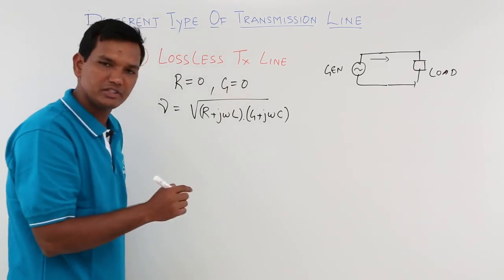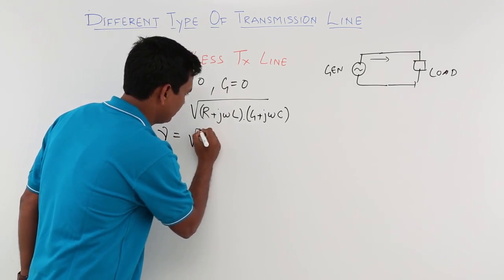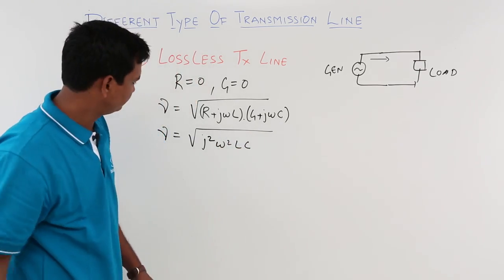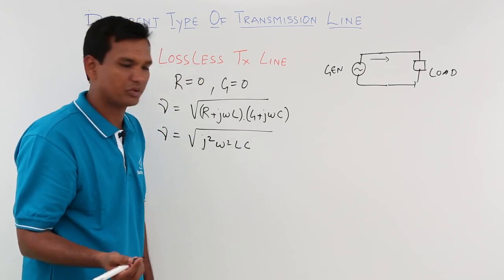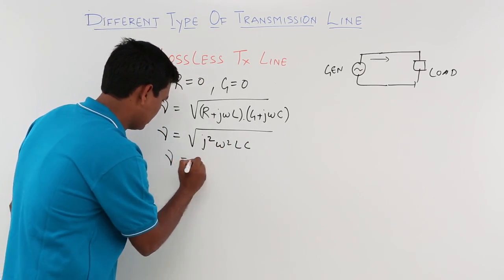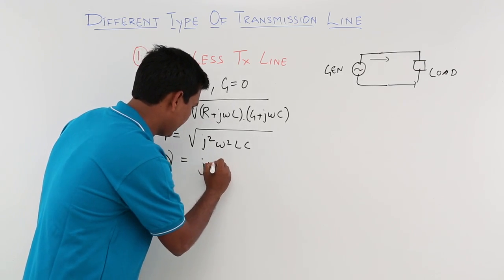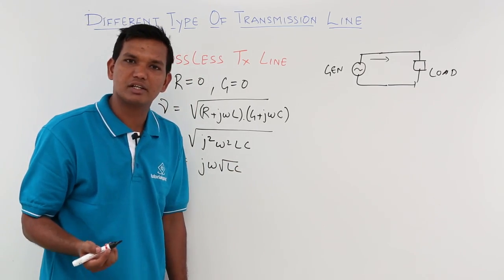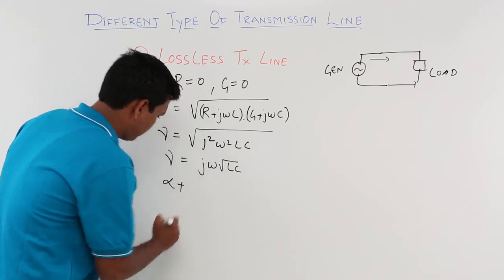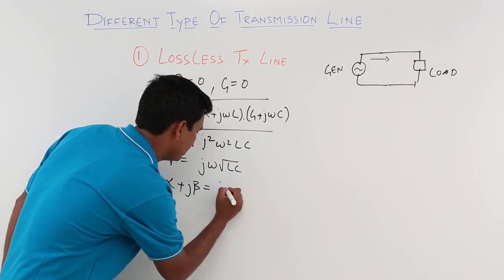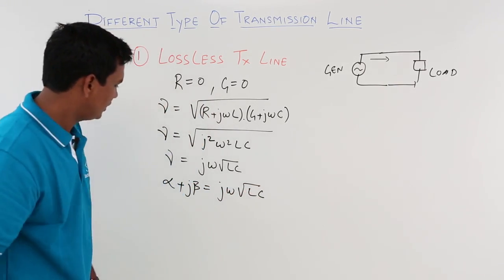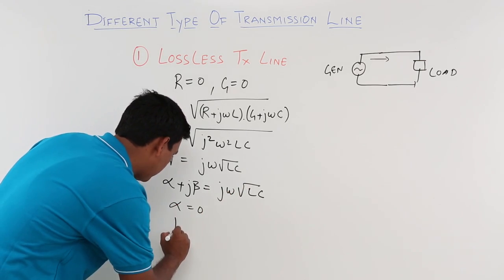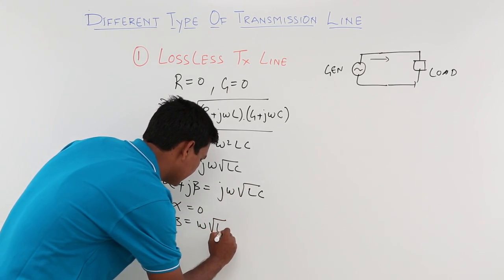Now, substituting R = 0 and G = 0, gamma becomes the square root of j²ω²LC. Since j² = −1, this simplifies to jω√(LC). Since gamma equals alpha plus j·beta, comparing both expressions we get alpha = 0 and beta = ω√(LC).